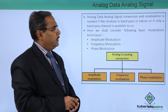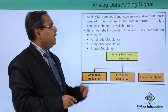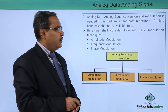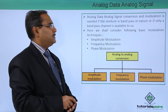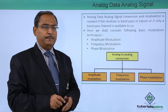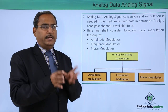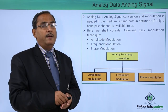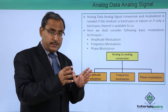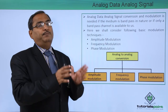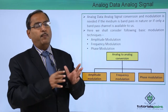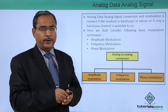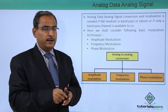Analog data to analog signal conversion and modulation is needed if the medium is band-pass in nature, or if only a band-pass channel is available to us. That means, in the case of analog data, the respective frequency is not matching with the critical frequencies of the band-pass filter. So in those cases, we go for analog data to analog signal modulation, so that we can keep our carrier frequency according to the band-pass critical frequencies.